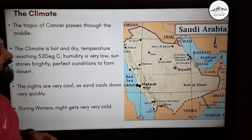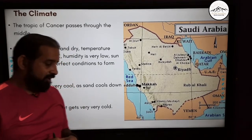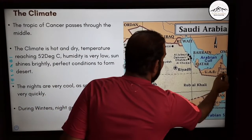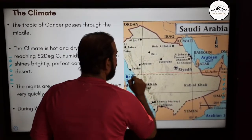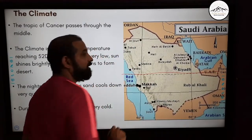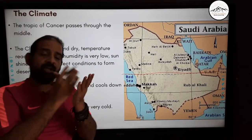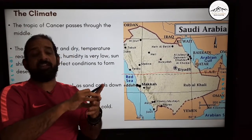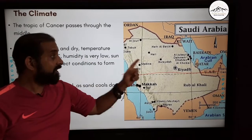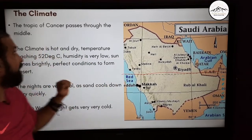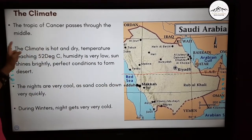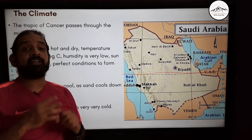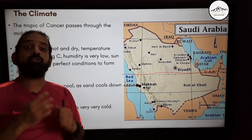Now let's look at the climate of Saudi Arabia. The Tropic of Cancer passes right through the middle of Saudi Arabia. The Tropic of Cancer is a line where the sun shines directly. The climate is very hot and dry — sometimes the temperature reaches 52 degrees centigrade with very low humidity.